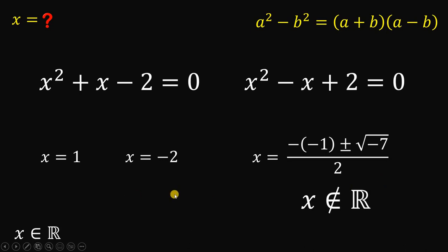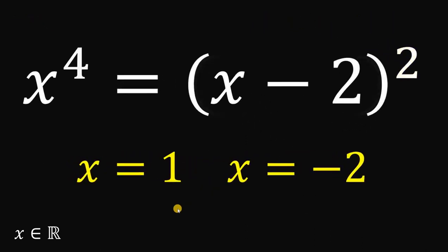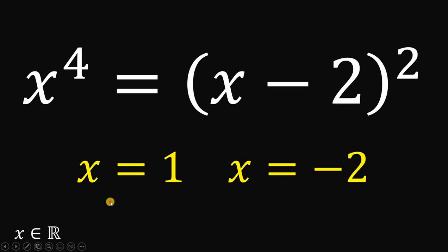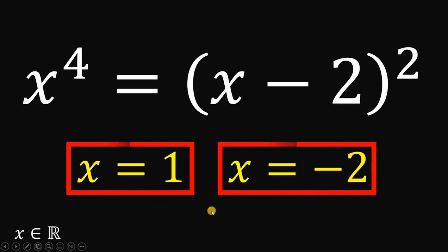Therefore, the only real values of x in this equation must be equal to x equals 1 or x equals negative 2. And that is our answer. So, the only real values of x that satisfy this equation must be x equals 1, or x equals negative 2. And, as always, we are done.